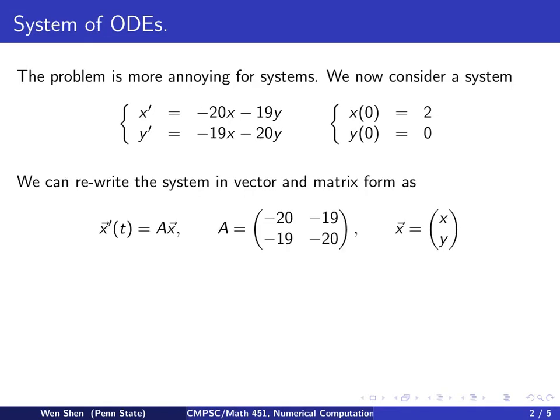We can rewrite this into matrix vector form, forming the unknown vector, putting x, y into a vector, call it vector x, and form the A matrix, taking the coefficients in front of x, y in their corresponding positions. And then you can write it like this.